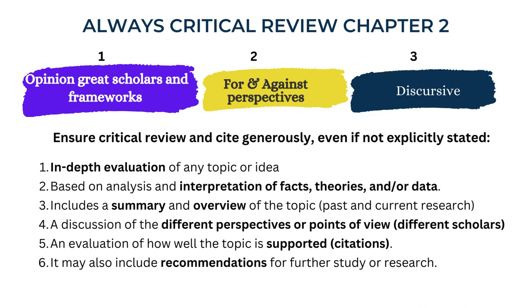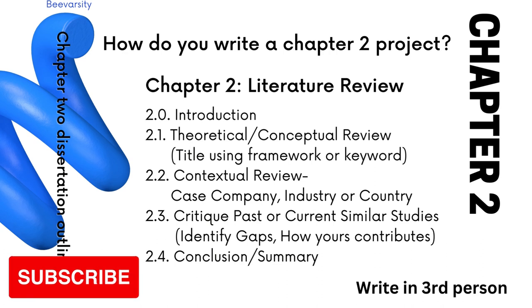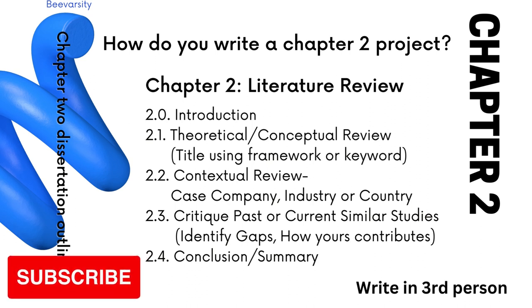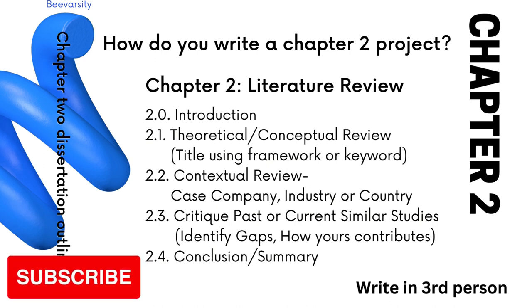Cite generously, and critically review — that is what chapter two is about. An outline of chapter two is: introduce your chapter, provide a theoretical and conceptual review of all your keywords and frameworks, provide the contextual review discussing your case study, company, industry, country, or city. Critique current and past studies, identify gaps, and then reveal how your study will contribute to the literature in this field. Your study has to be steeped in the literature as well. Then conclude with a summary — not too long, please.